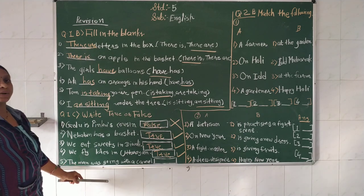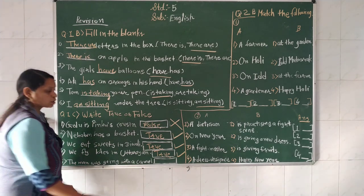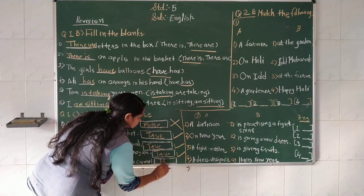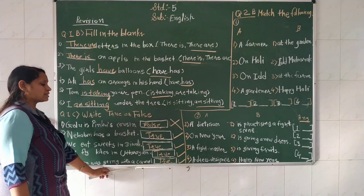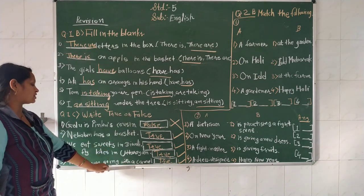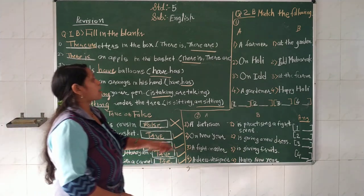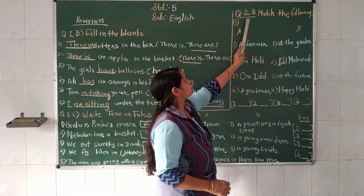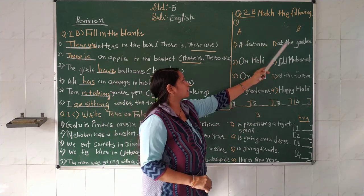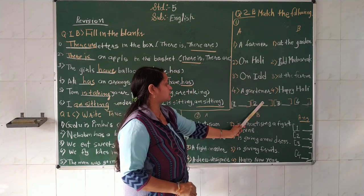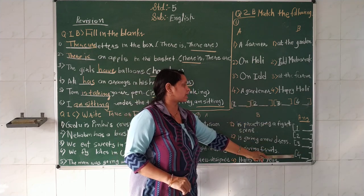ત્રીજો સવાલ: The man was going with a camel. - અઈ, ઊંટ સાથે માણસ ગઈ રહ્યો છે - True. True/False, ટ્રુ-ફોલ્સ ત્યાં tick/check કરવાનાં છે. Teacher એ પાંચ questions આપ્યા છે.